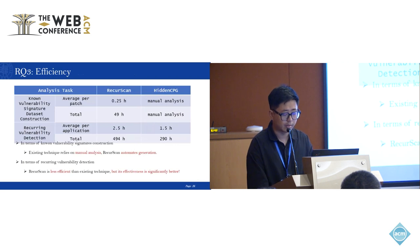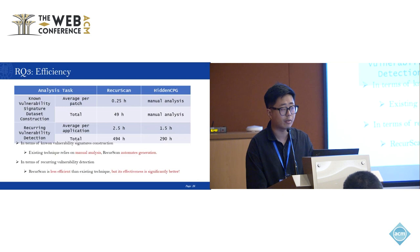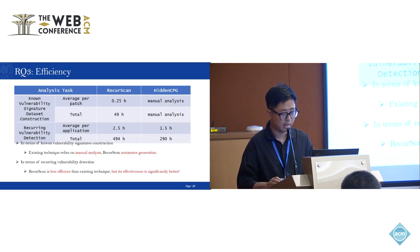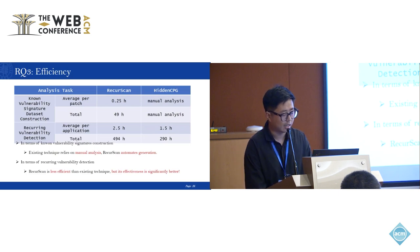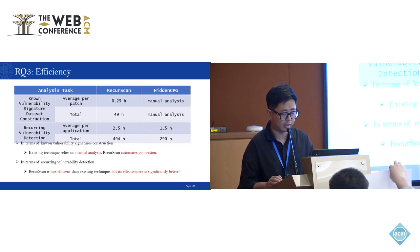To answer the third question, we recorded the runtime of both HiddenCPG and Rikerscan across the whole dataset. In terms of generating vulnerability signatures, Rikerscan took a total of 49 hours with an average time of 0.25 hours per patch, whereas HiddenCPG relies on manual analysis in this process. In terms of vulnerability detection, HiddenCPG is more efficient than Rikerscan. Considering that vulnerability detection is typically an offline task, we believe a stronger capability in vulnerability detection is more favorable.